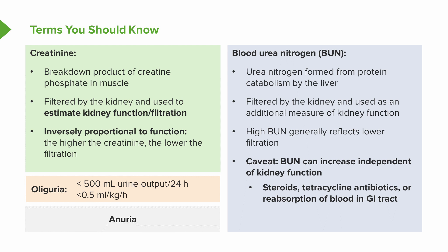Oliguria is another important term. Patients are commonly oliguric when they develop acute kidney injury, meaning they're producing less urine — typically defined as less than 500 mL of urine output within 24 hours, though some definitions use less than 400 mL. Finally, there's anuria, defined by less than 100 mL of urine output in a 24-hour period. This is essentially one of the worst signs of acute kidney injury, as patients are producing virtually no urine.